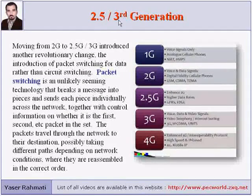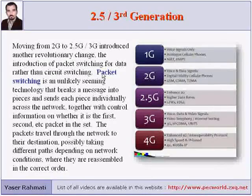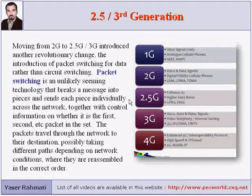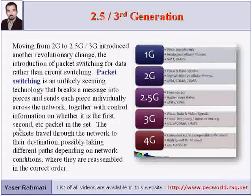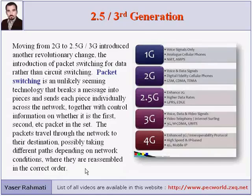2.5G and 3G. Moving from 2G to 2.5G and 3G introduced another revolutionary change: the introduction of packet switching for data rather than circuit switching. Packet switching breaks a message into pieces and sends each piece individually across the network with control information. The packets travel through the network to their destination, possibly taking different paths depending on network conditions, where they are reassembled in the correct order.